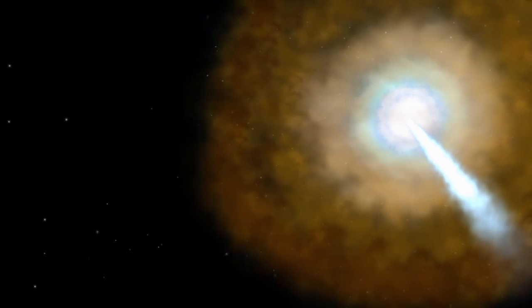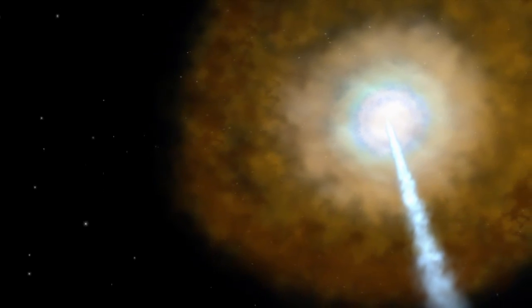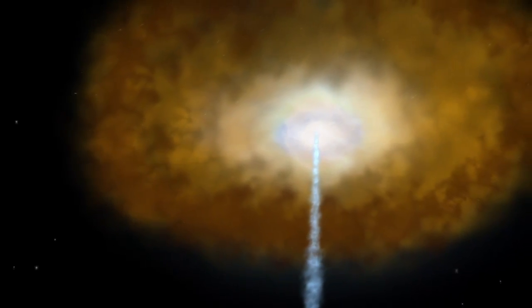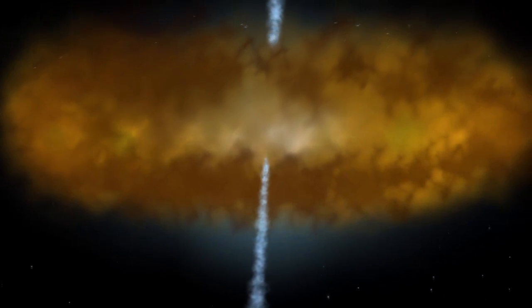What emission we detect from an active black hole is a function of how we see it, whether we're looking face-on and into one of its jets, or viewing it from the side, through the disk of gas and dust that surrounds it.